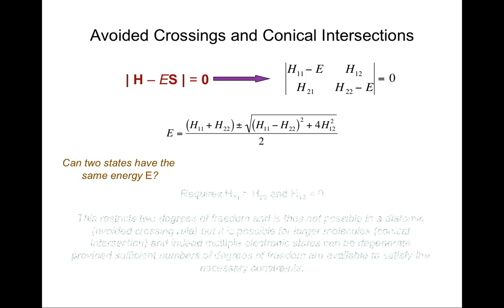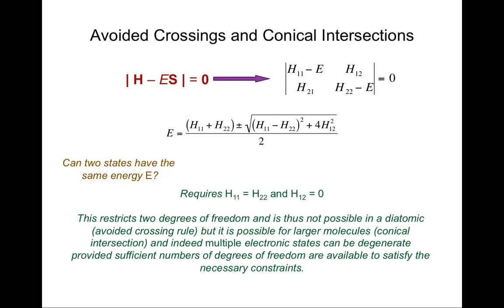They would be degenerate. For that to happen, two conditions must be true: namely that H11 and H22 are the same, and also that the off-diagonal matrix element H12, which is equal to H21 by symmetry, is equal to zero. So that requirement involves two degrees of freedom, and a diatomic molecule only has one degree of freedom — its bond length.